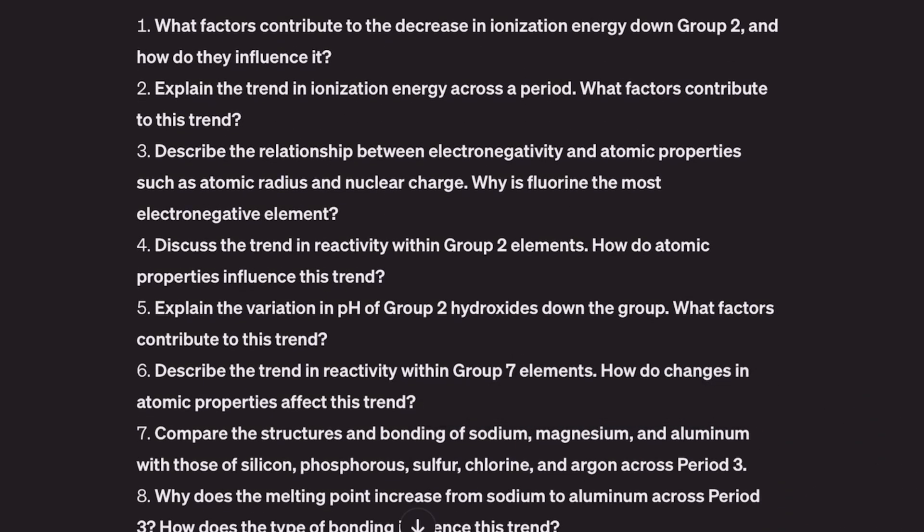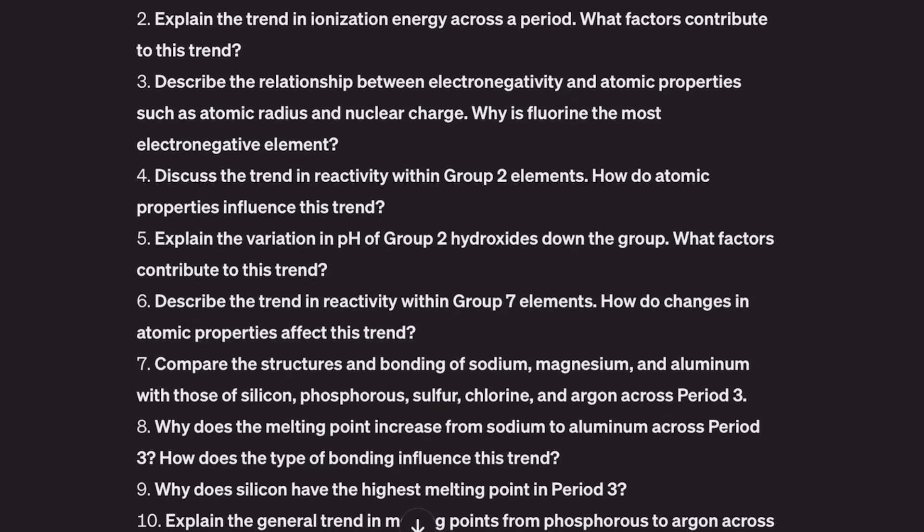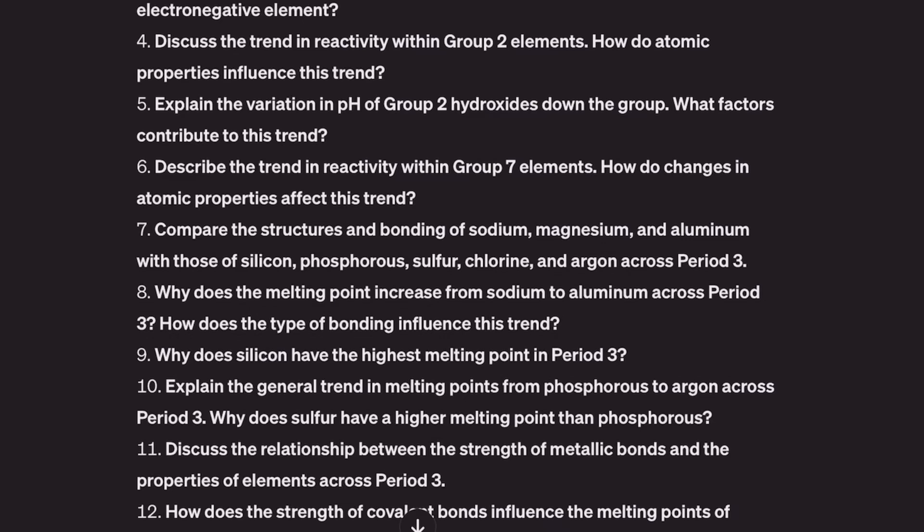So: 'What factors contribute to the decrease in ionization energy down group 2 and how do they influence it?' — yes, that's a good one. 'Explain the trend in ionization energy across a period — what factors contribute?' — that's really good. It's not exactly OCR-A language but we really want to focus on a way of self-testing on the facts. 'Describe the relationship between electronegativity and atomic properties such as atomic radius and nuclear charge' — wow, that's a really good one. 'Discuss the trend in reactivity within the group 2 elements and how atomic properties influence this trend.'